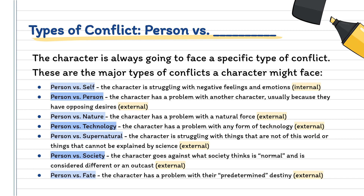Then you have person versus society. Person versus society is when a character is going against what society thinks is normal, and so they're considered different or an outcast. This could be going against the government, fighting against a bigger force — maybe it's like a revolution.